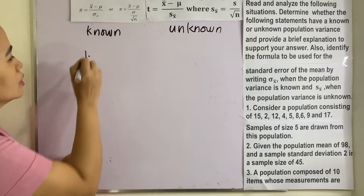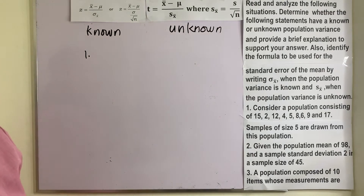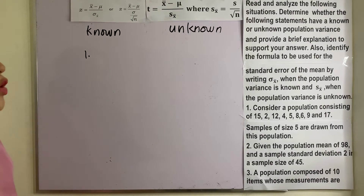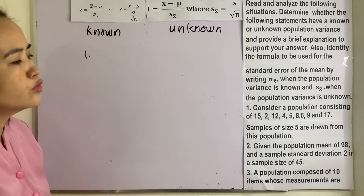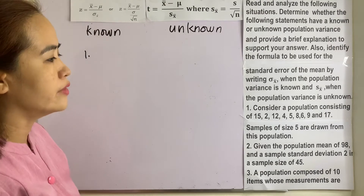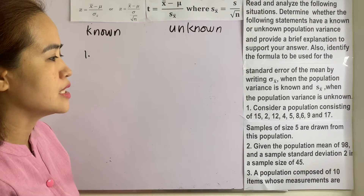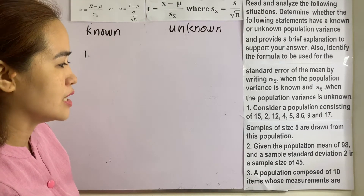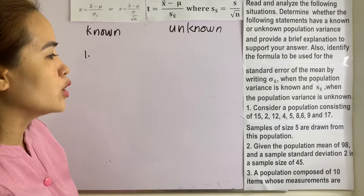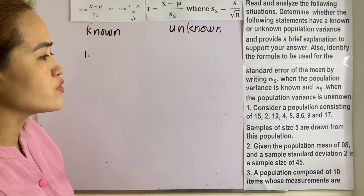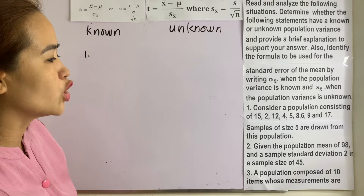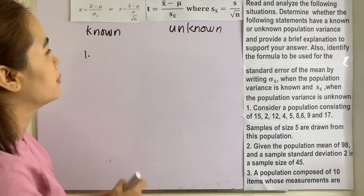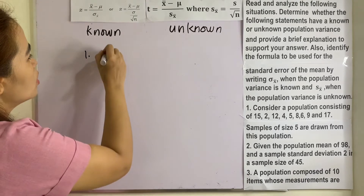Number one: consider a population consisting of the values 15, 2, 12, 4, 5, 8, 6, 9, and 17. Samples of size 5 are drawn from the population.